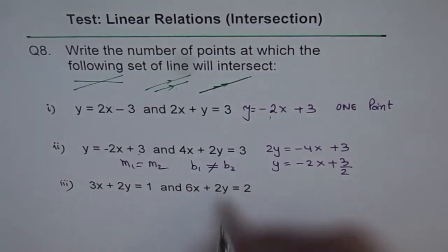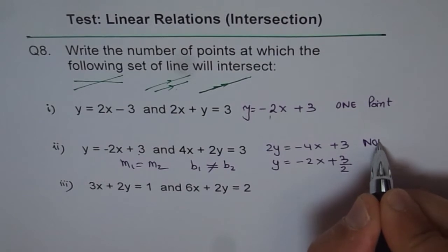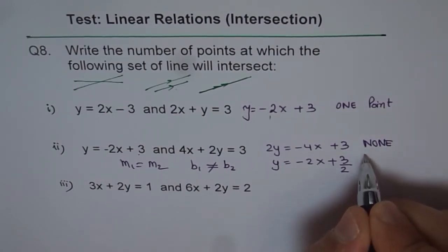So they are parallel lines. Their y-intercepts are different. Therefore, number of points is none. They are parallel lines. We denote parallel lines like this.